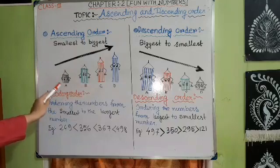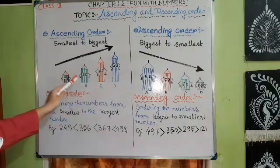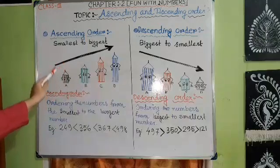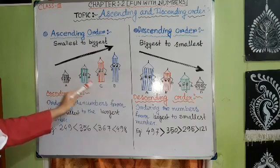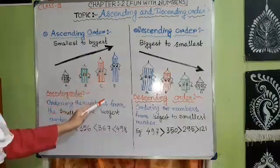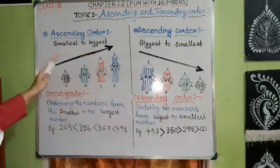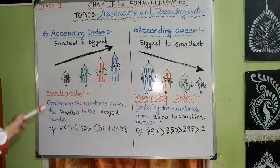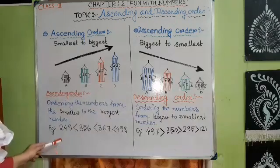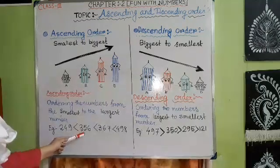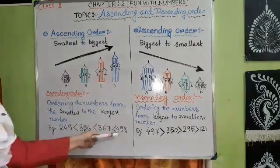I have taken 4 pencils — A, B, C, and D — and arranged them in ascending order according to their heights. I chose A first because A is the shortest. Then B, because B is longer than A. Then C, because C is longer than B. Then D, because D is longer than C. Ascending order means ordering numbers from smallest to largest. For example: 249, 356, 367, 498 — these numbers are in ascending order.